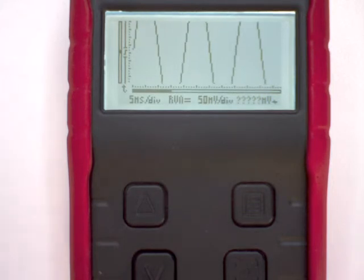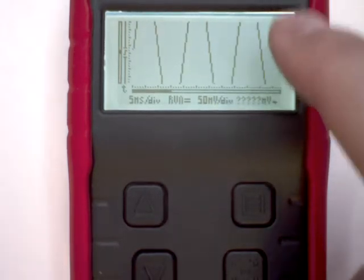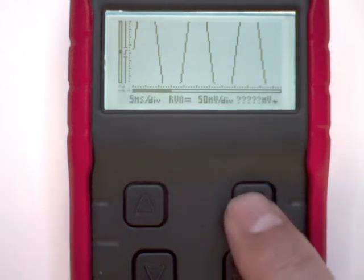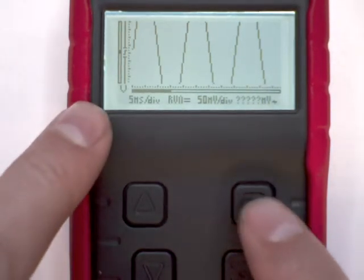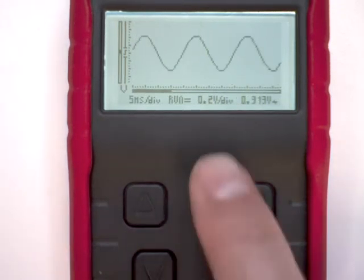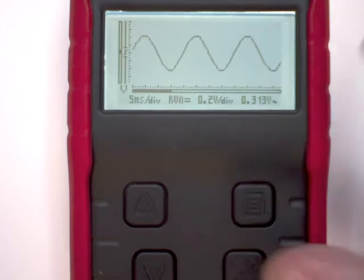If we turn it up the signal immediately goes off screen so we will have to adjust the volts per division setting, and we will do this manually. So we select volts per division and now with the arrow keys we can change the volts per division setting to an appropriate value as shown.